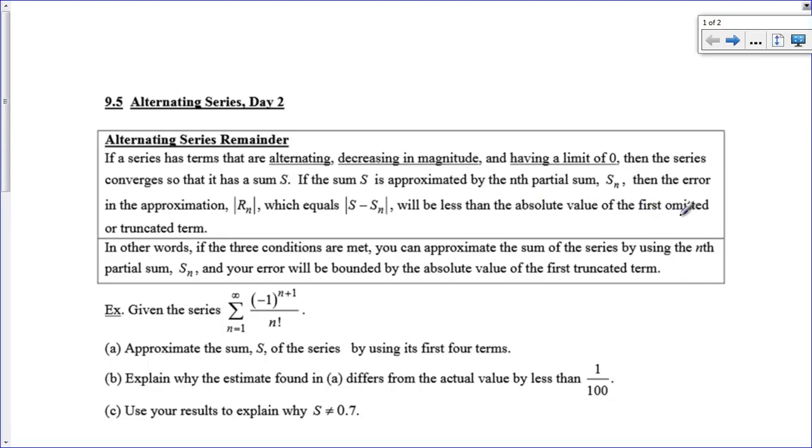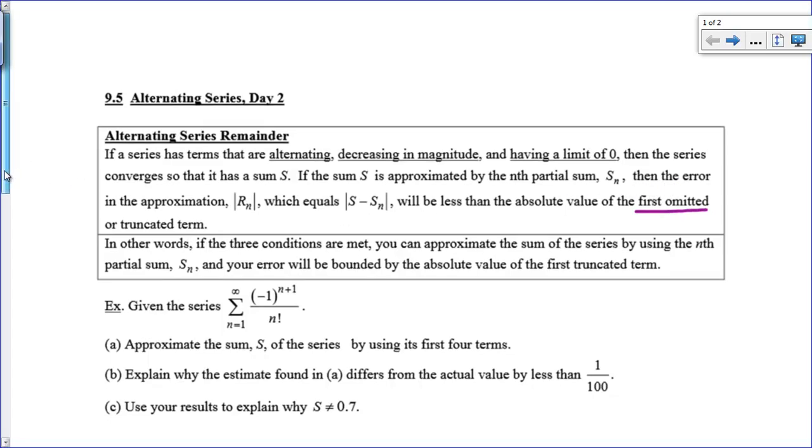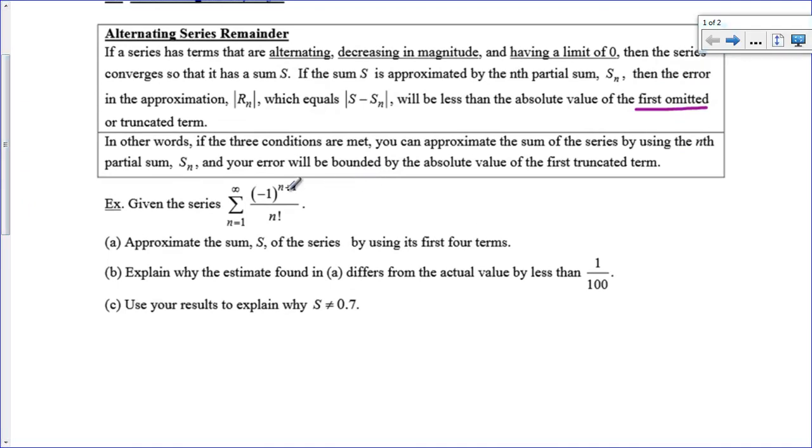And this error is always less than the absolute value of the first omitted term. And this is actually very easy. You just have to figure out what the next term is and that is your error. So let me show you how to do this. Let's take a look at something that we know converges. We did it in our homework. This is a convergent alternating series. And if it converges, it means it converges to some s.